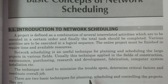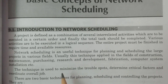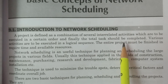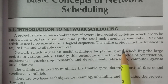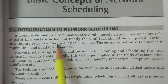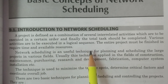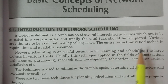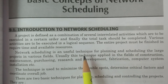What is meant by a project? A project is defined as a combination of several interrelated activities. There are many activities involved in the project which are to be executed in a particular order, and finally the total task is to be completed in the minimum possible time. The various activities are going to be executed in a logical sequence — that is, one particular order.